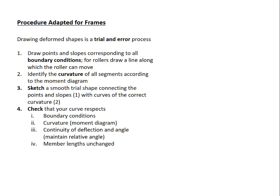We identify the curvature of all the segments according to the moment diagram. We sketch a trial shape that connects the points and slopes from step 1 with the curvature from step 2, and then we check that the curve respects boundary conditions, the curvature implied by the moment diagram, the continuity of deflection and angle. We keep in mind that this means that we maintain the relative angle between members that frame at a joint, and we also keep the member lengths unchanged.